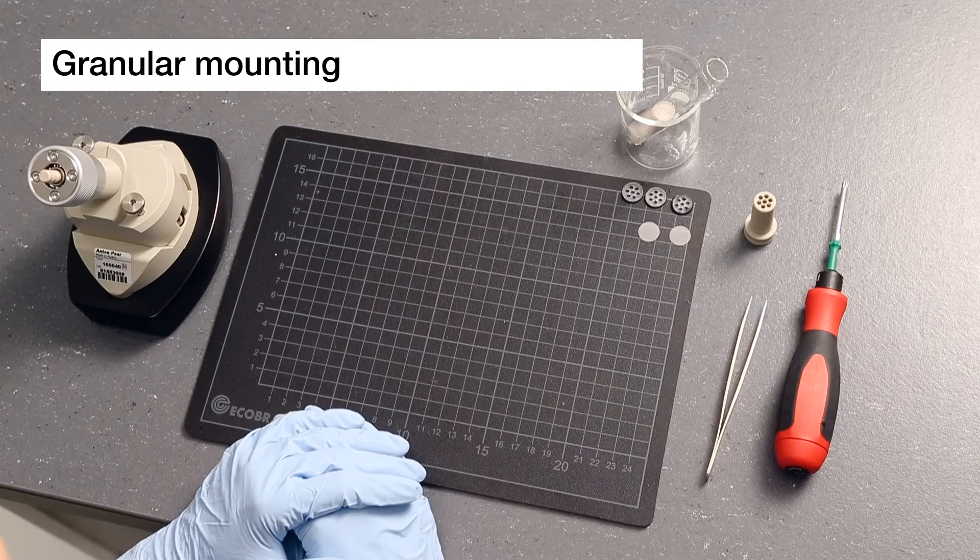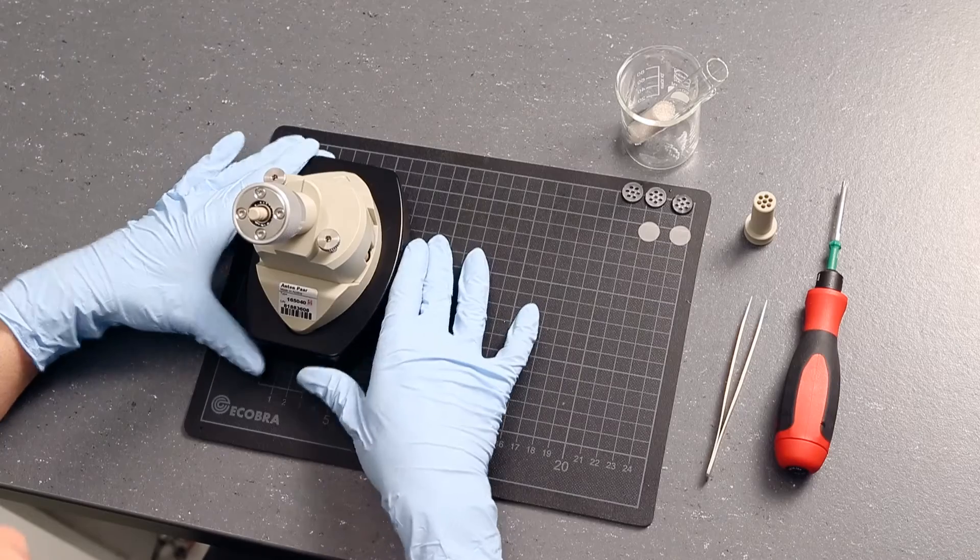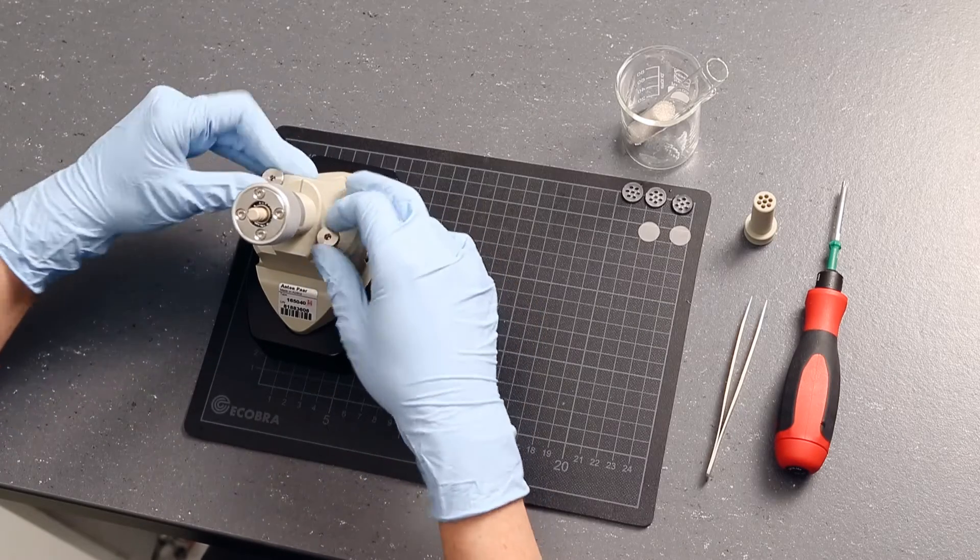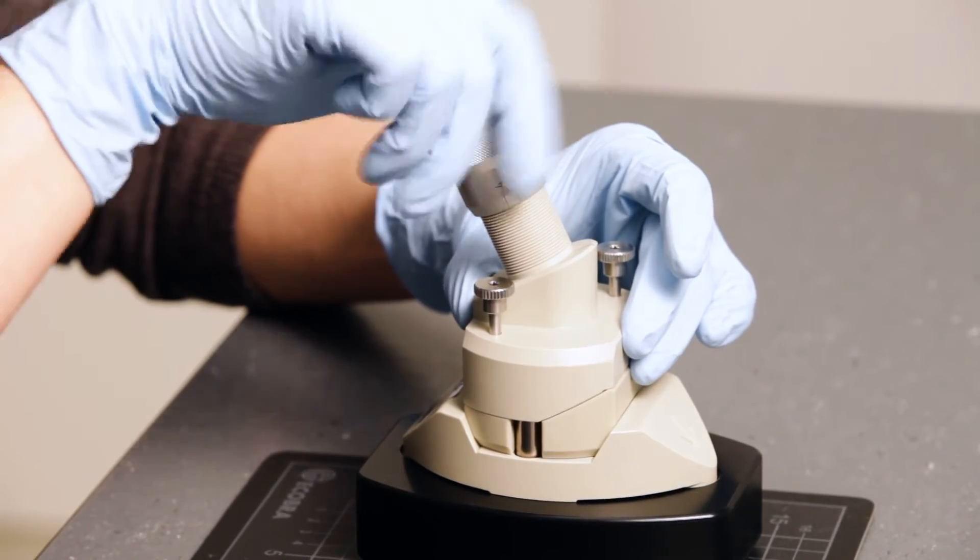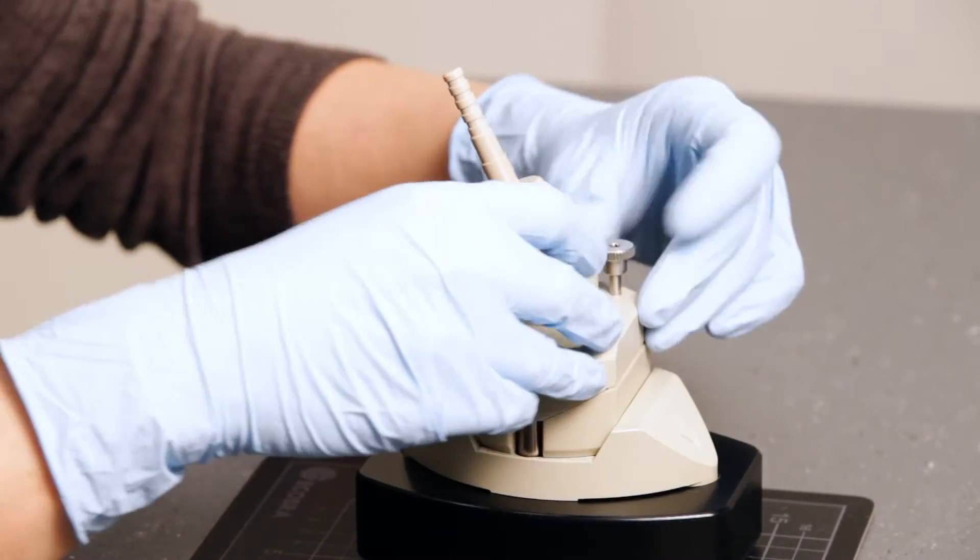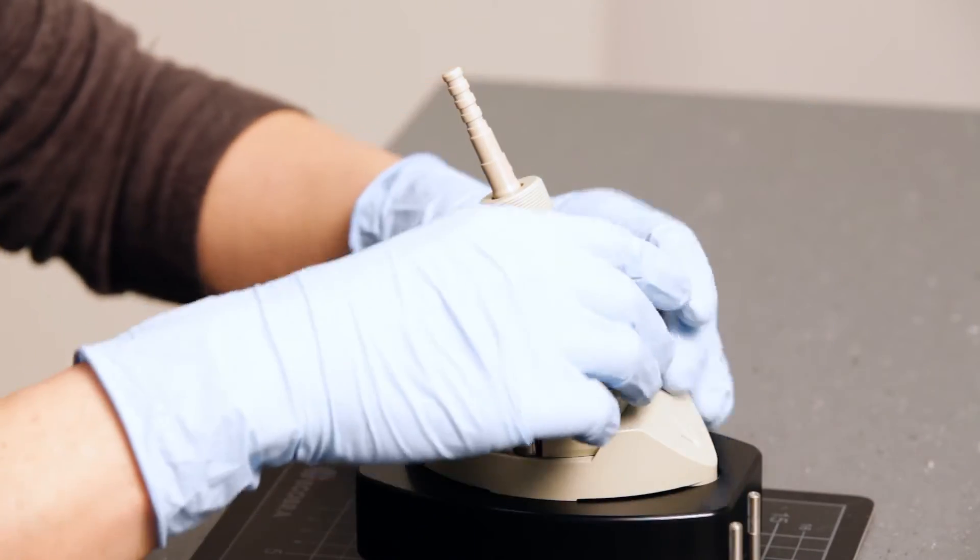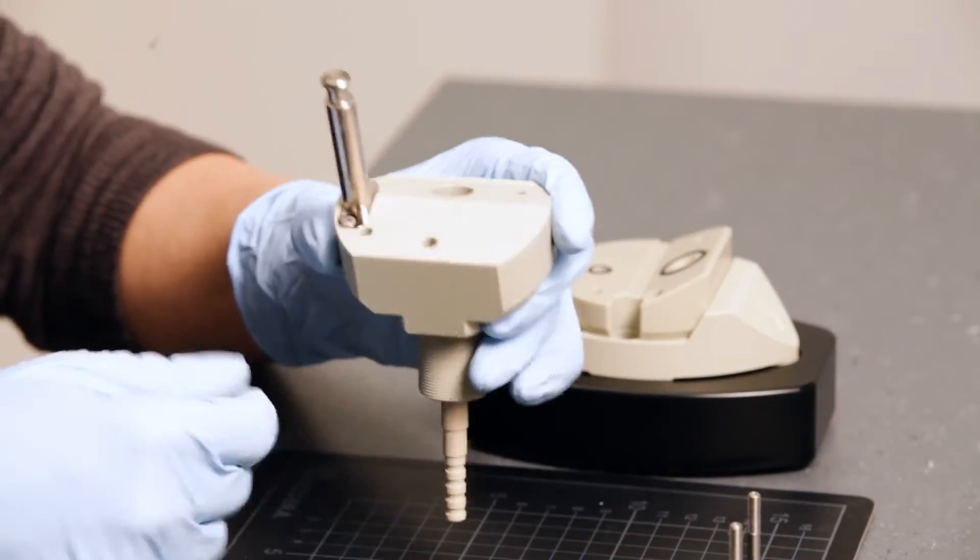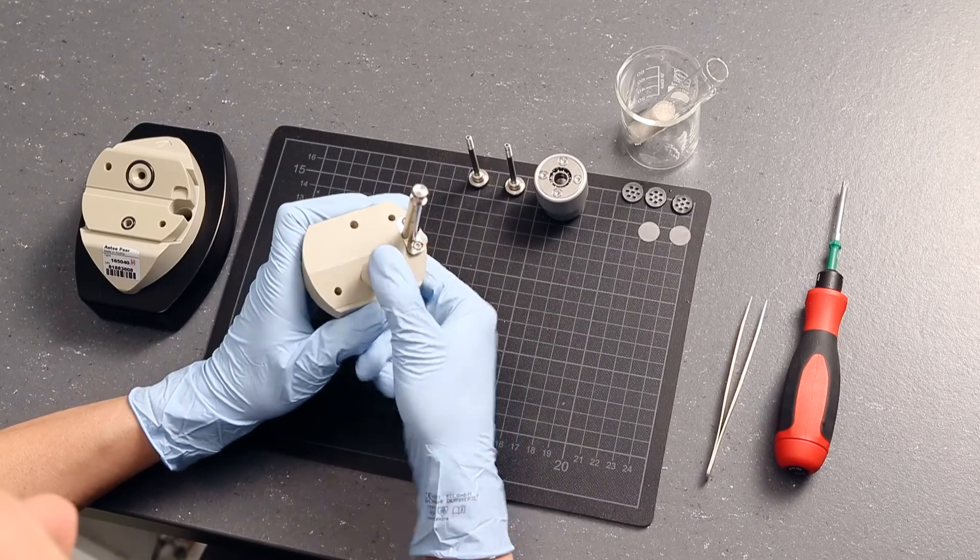To mount a granular sample, you need to take a slightly different approach. Disassemble the cylindrical cell to access the sample compartment. Use the mounting rod to push the shaft to the bottom.